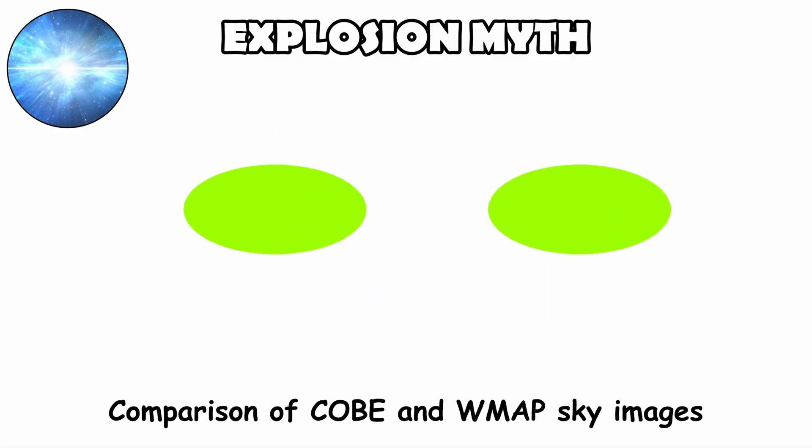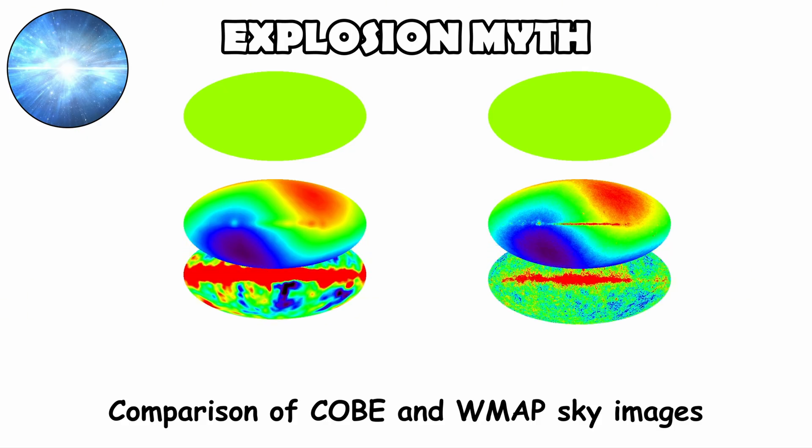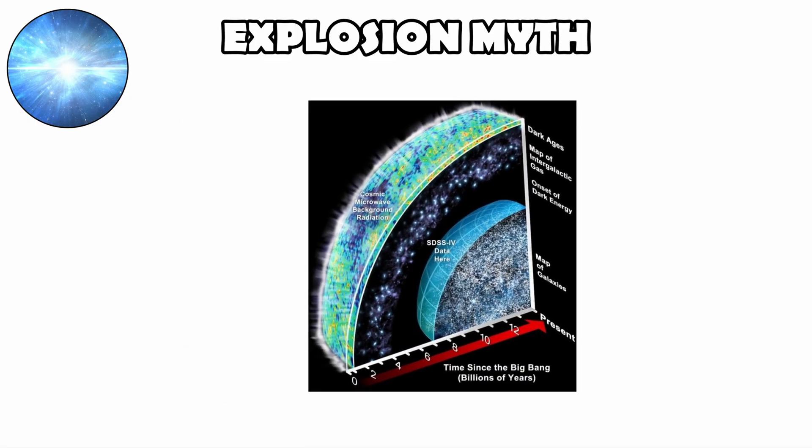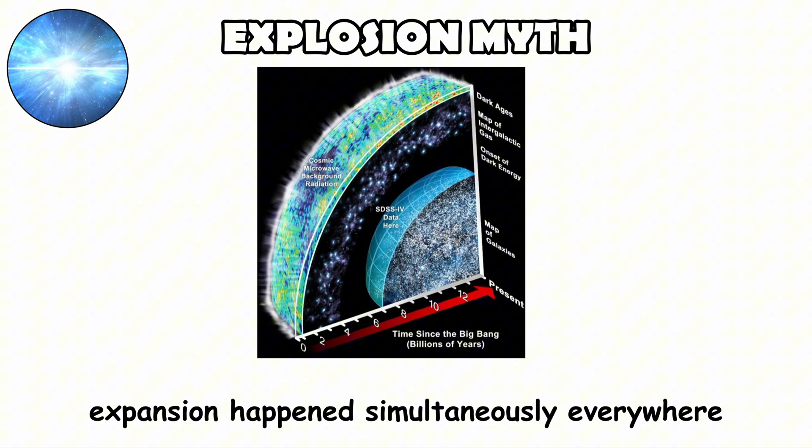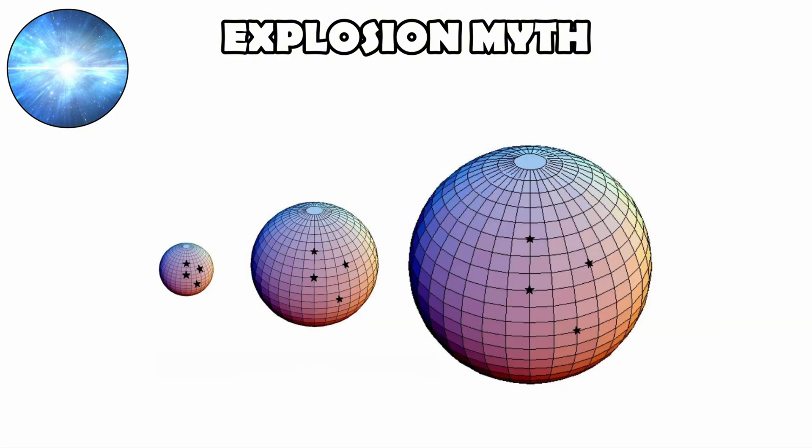The cosmic microwave background, the faint radiation left from the early universe, shows nearly the same temperature in every direction with only tiny variations. This uniformity matches the idea that expansion happens simultaneously everywhere, not as a blast spreading out into a void.